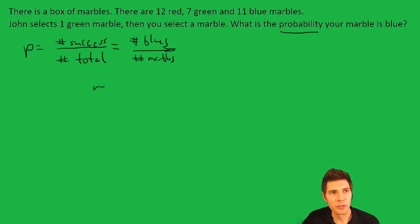So we can make a little chart. We could say red, there's 12, green, there's 7, blue, there's 11, and total, if we add these up, we get 30.